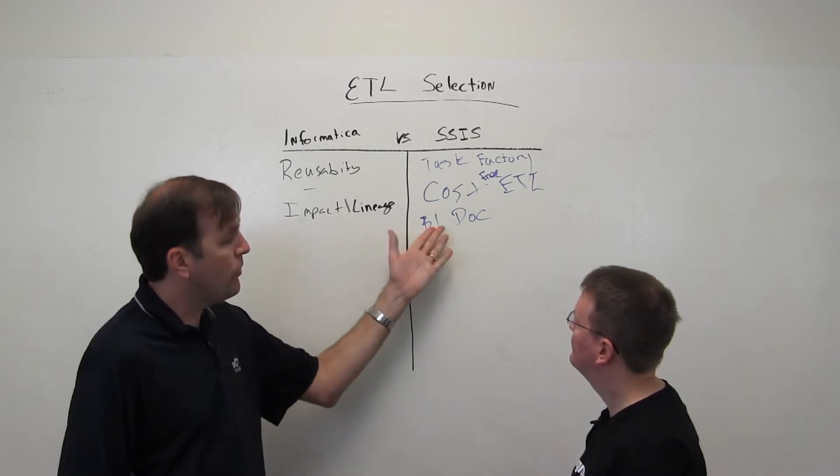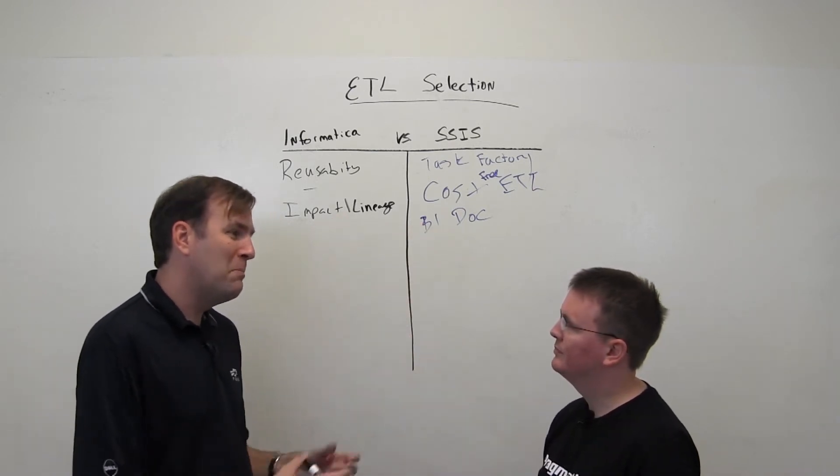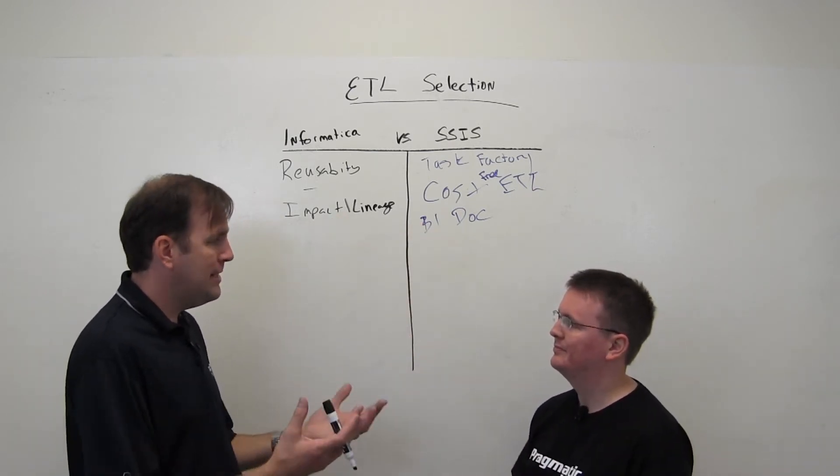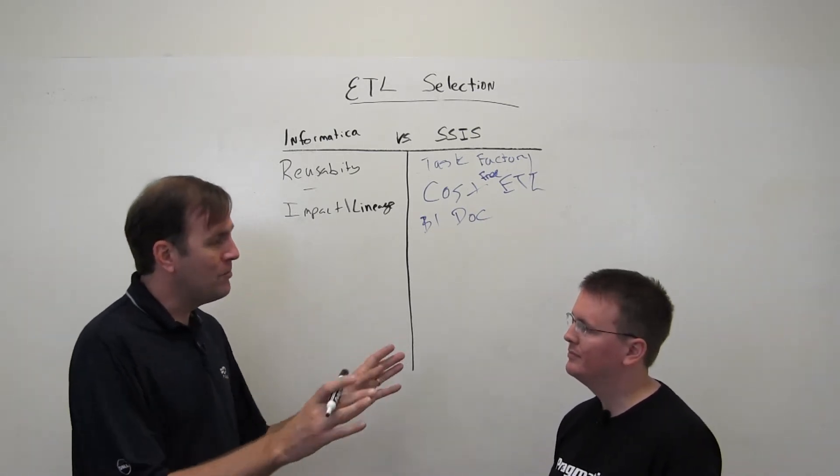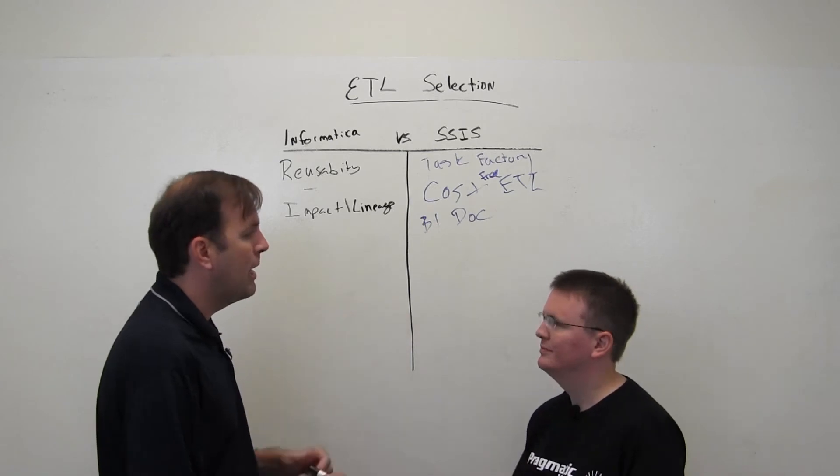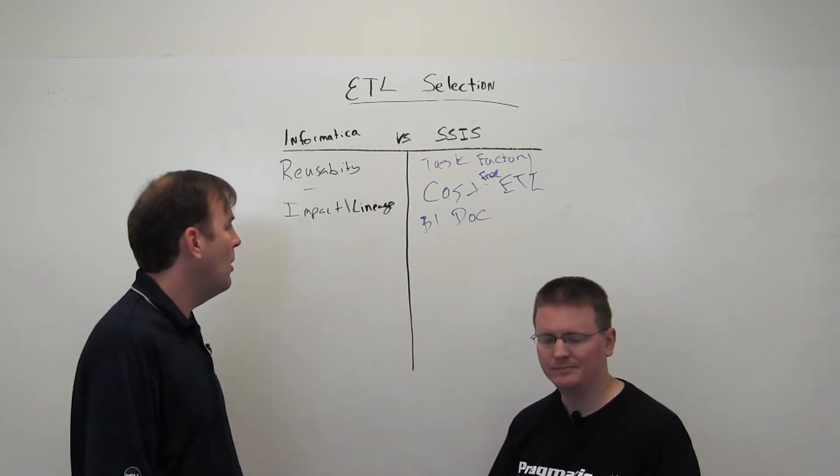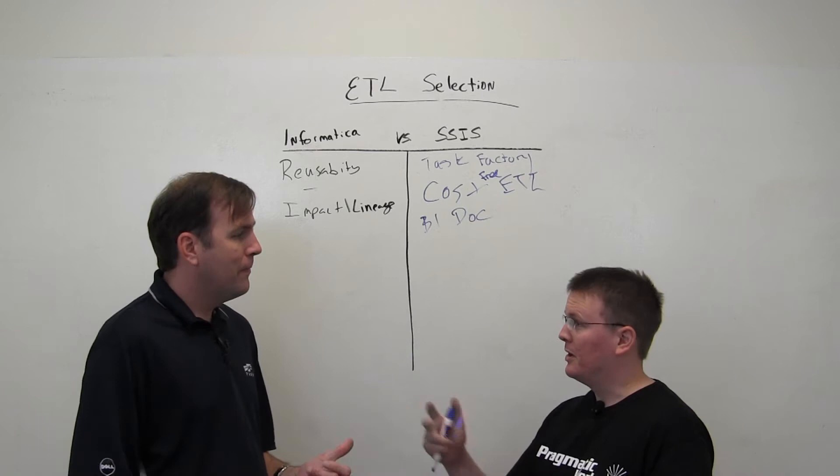SSIS didn't initially have that built in. There are, again, some third-party tools that are fairly inexpensive that work directly in with SQL Server. One, again, that our company sells, Pragmatic Works, sells called BI Documenter, which can do that as well. The good thing is Microsoft also is building that. They were building that at one point. It had a CTP out there, a technology preview. And right now, there's some stuff that's coming eventually that might bring that CTP to fruition. It's still a ways away, probably.